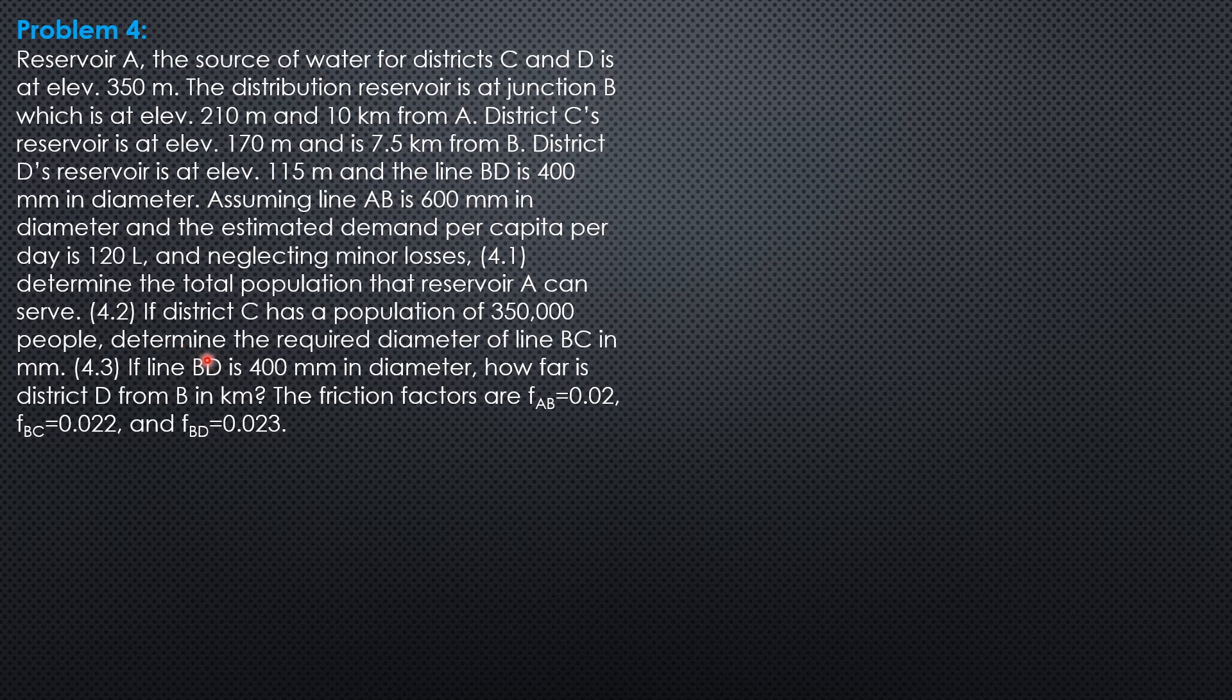Then, if District C has a population of 350,000 people, determine the required diameter of line BC in mm. Then, if line BD is 400 mm in diameter, how far is District D from B in kilometers?